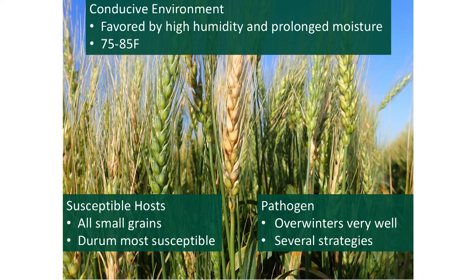When it comes to determining the amount of risk in your field from Fusarium head blight, there are three things you can consider. One, and probably the most important, is environment. This disease is favored by high humidity and prolonged periods of moisture prior to and during the heading and flowering process. The optimal temperature range is 75 to 85 degrees, but disease can still occur outside of this range if ample moisture is present.